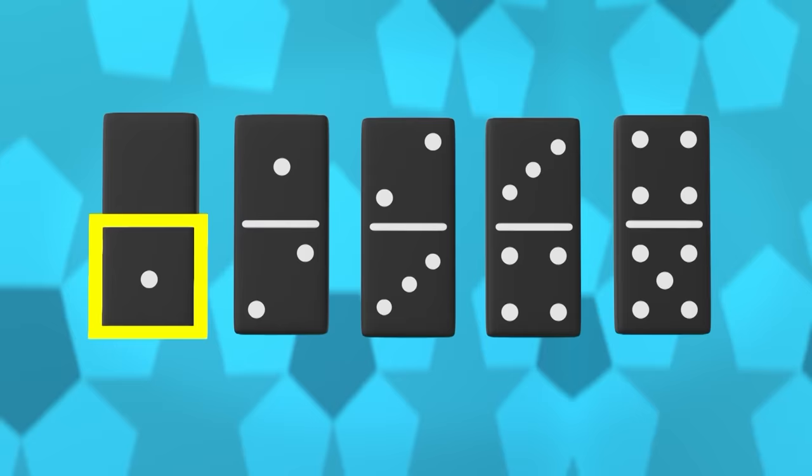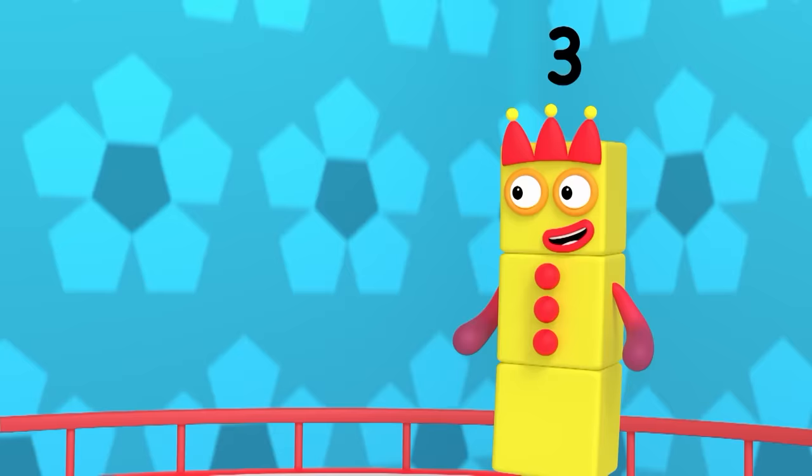Here's a row of dominoes. But can you spot the way it goes? The next along you might have spied has one more spot on either side. That's a pattern.